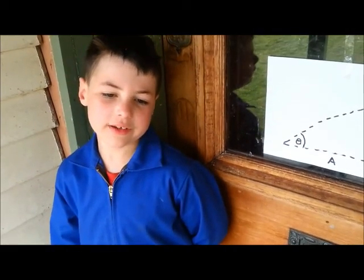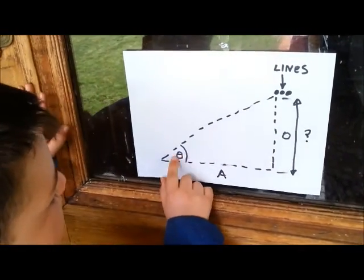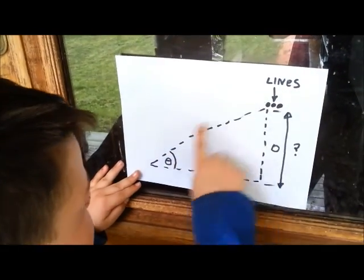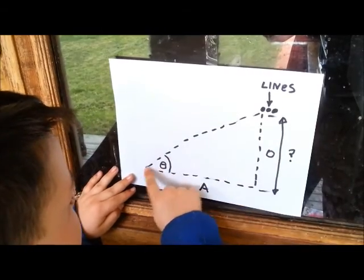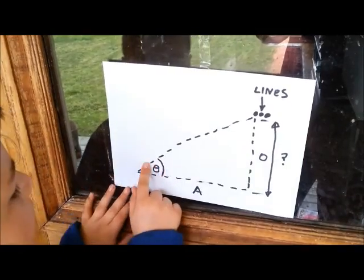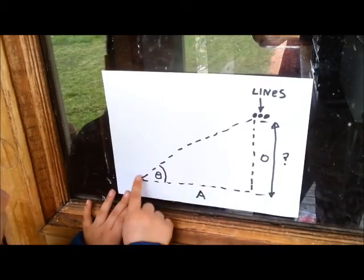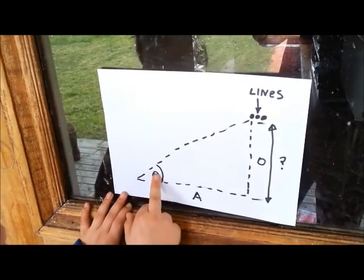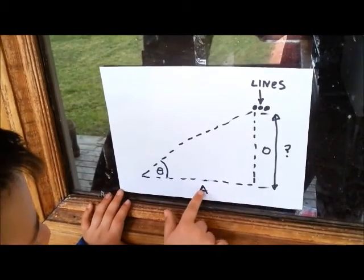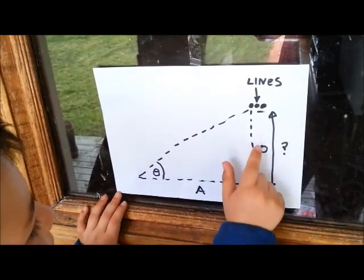We're going to use trigonometry to measure it. This is the measuring point and we're going to measure the angle here and figure this one out. If we can figure out the angle and we can measure the adjacent, which is this side here, we can figure out the angle using a special tool that we have, and we can figure out the adjacent with an ordinary tape measure, and we want to figure out the opposite side.